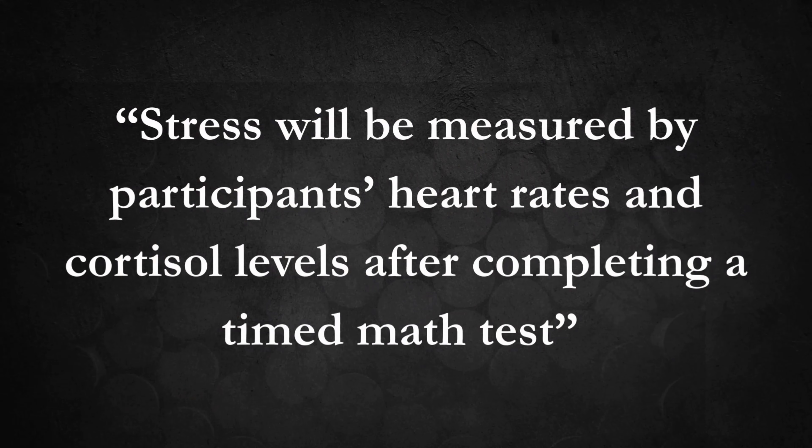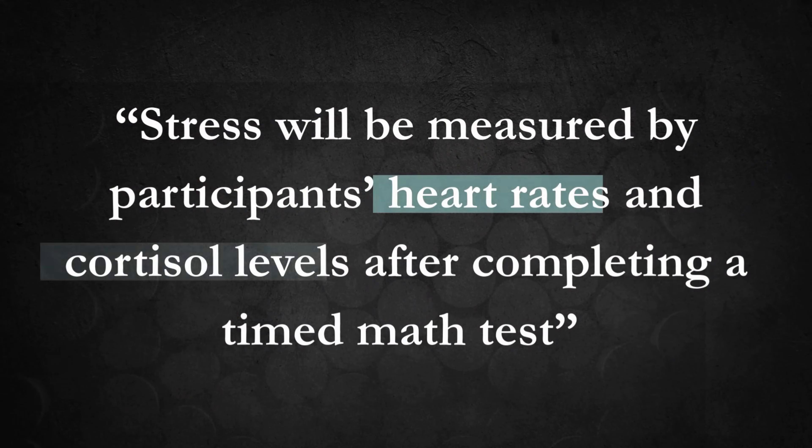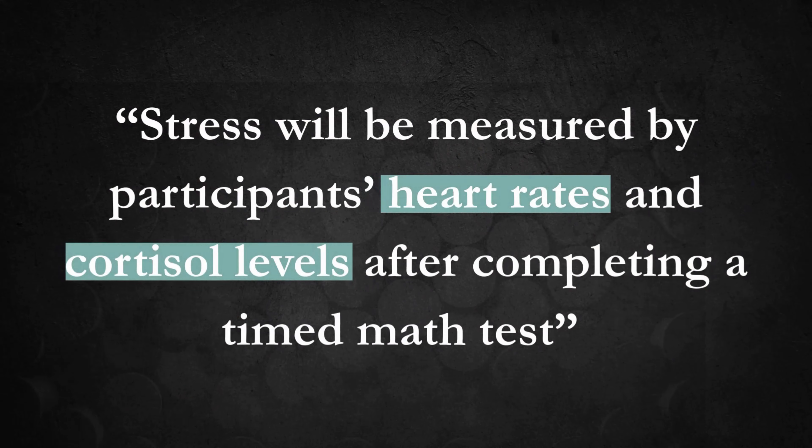Here's a good operational definition of the dependent variable: stress will be measured by participants' heart rate and cortisol levels after completing a timed math task. That's an operational definition. If someone else wanted to replicate your study, they could follow that definition step by step. We've identified our variables and clearly defined them — now what? How do you actually design an experiment to test the effectiveness of Anti-Stress 9000?